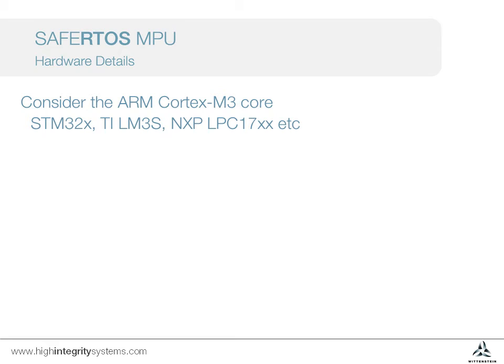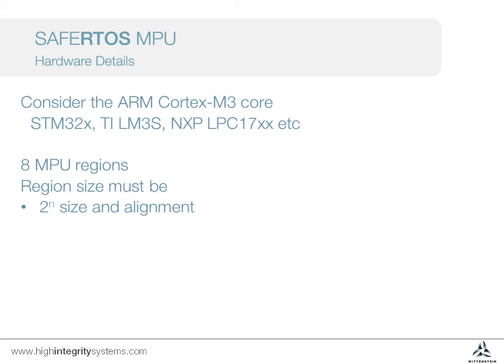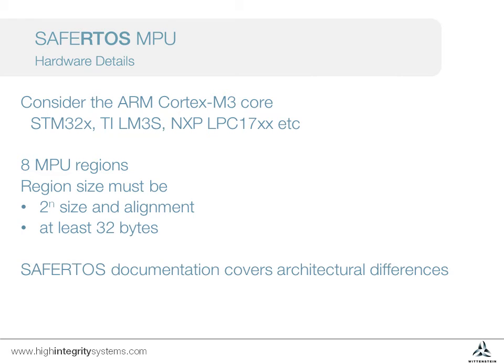In particular, there are a limited number of regions — on the Cortex-M3 there are 8 — and some restrictions on how these regions are aligned in memory and what size they can be. The SafeRTOS documentation goes into much more detail for each specific architecture.